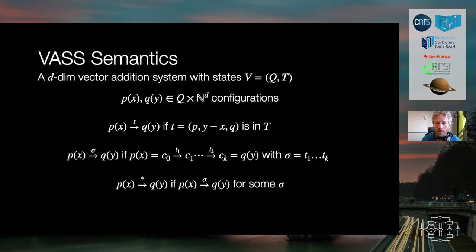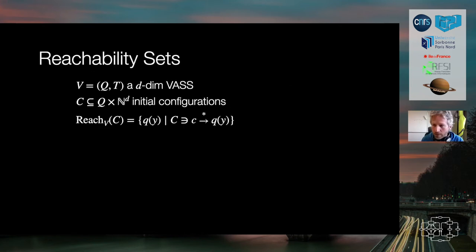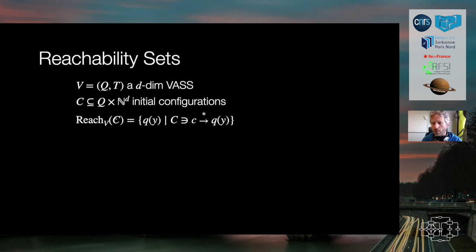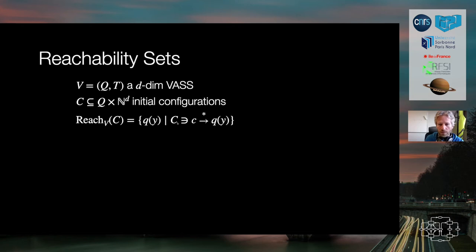Once we have defined the semantics, we can define the effect not just of one transition but of a word of transitions, corresponding to executing transitions one by one. We also introduce the reachability relation between configurations, which corresponds to the existence of a sequence of steps moving from configuration (p, x) to configuration (q, y). An important object is the reachability set: given an initial set of configurations C, it is the set of all configurations reachable from C.